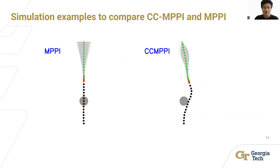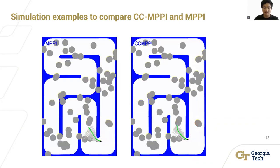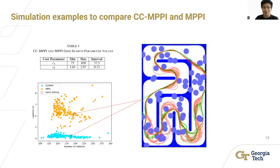We also run the vehicles with both controllers in a cluttered environment. By tuning the cost for rewarding collision avoidance and the cost for rewarding fast speeds, we perform a grid search and compare the two controllers. From the plot on the right, one can tell that the red trajectories produced by the CCMPPI show a much more aggressive driving maneuver than the green trajectories generated by the MPPI. As demonstrated by the scatter plot, the CCMPPI controller can achieve smaller lap times with fewer collisions.